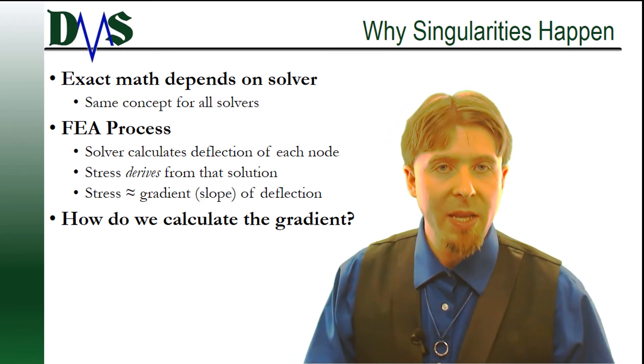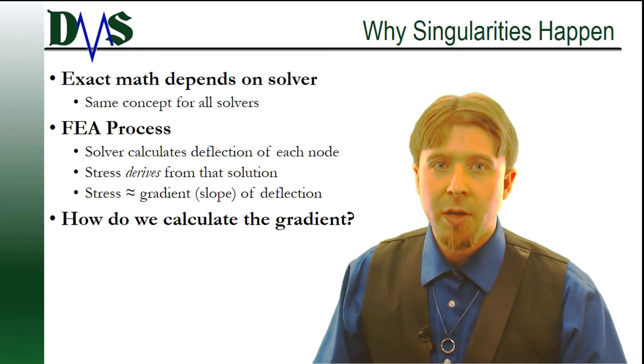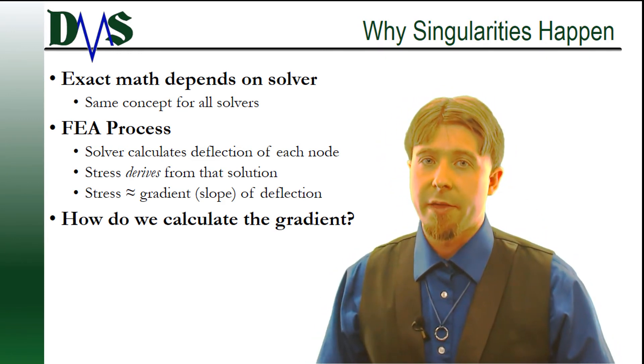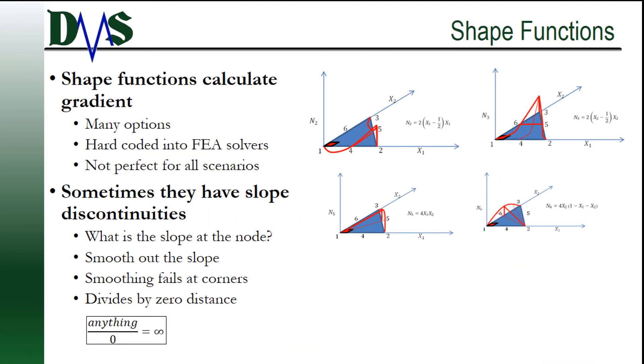Lots of math pours into ensuring the solver gets that answer correct, but what we often want is the stress. The stress then derives from that solution. We need to remember that stress comes from the gradient of the deflection. That's the change in deflection from one node to the next, and we're going to need some specialized math to calculate that gradient of deflection. So to calculate that gradient we need to use something called shape functions.